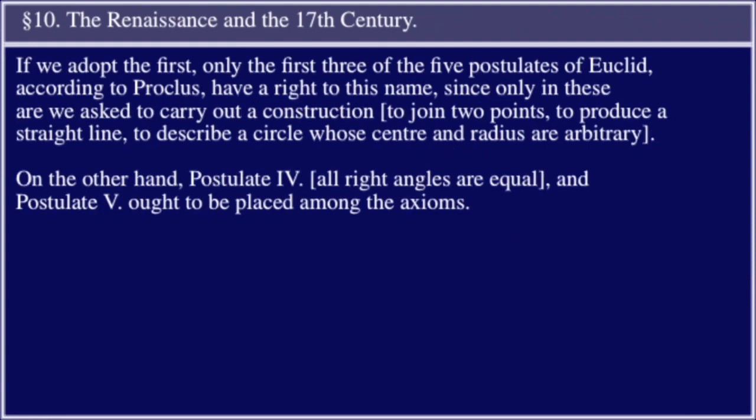If we adopt the first, only the first three of the five postulates of Euclid, according to Proclus, have a right to this name, since only in these are we asked to carry out a construction: to join two points, to produce a straight line, to describe a circle whose center and radius are arbitrary. On the other hand, Postulate Four — all right angles are equal — and Postulate Five ought to be placed among the axioms.